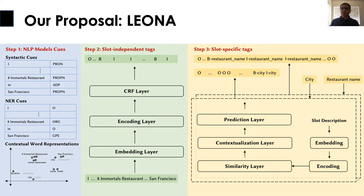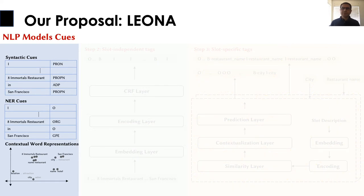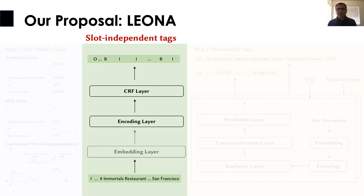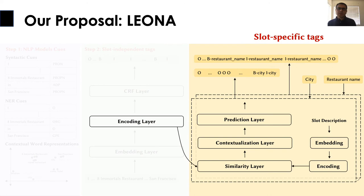To take on the challenge of the zero-shot slot filling task, we propose an end-to-end neural network called LEONA that works in three steps. Step 1 leverages pre-trained NLP models to acquire domain-oblivious and context-aware features about the input words. Step 2 fine-tunes these semantically rich features and produces slot-independent tags, which provide cues at a different granularity for the final step. Step 3 learns a generalizable context-aware similarity function between input words and those of the slot from seen domains, and exploits the learned function in unseen domains, further contextualizing representations for the final predictions.